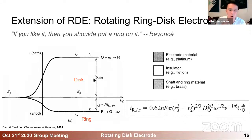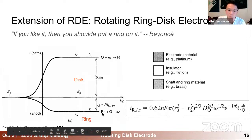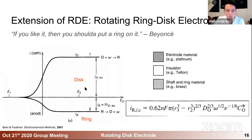In the ideal situation: at the disc, you generate the reduced form of a species from the oxidized form. At the same time, you apply an opposite voltage at the ring, and you detect the product R — trying to oxidize it back into its oxidized form. Ideally, the magnitude of the disc current and ring current will be a ratio determined by the geometry of the ring-disc electrode you decide to use.